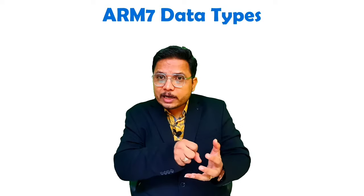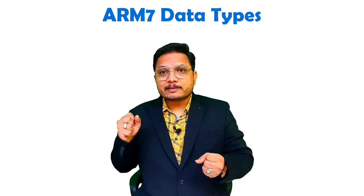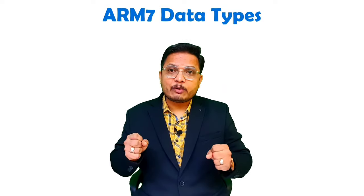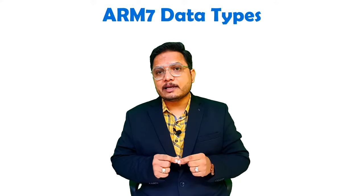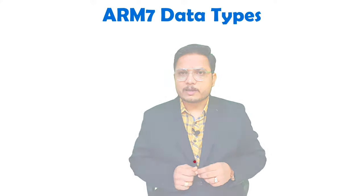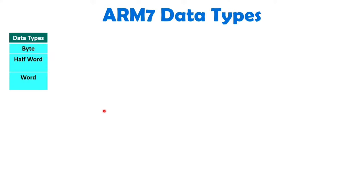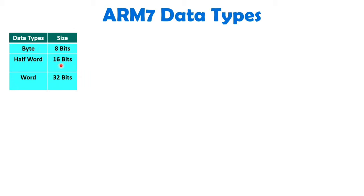And when you load it from the memory inside the ARM processor, at that time also few essential things are happening, that I'll be discussing in this video step by step. In data types we have three categories: byte, half word, and word. Size of byte is 8 bits, half word size is 16 bits, and word size is 32 bits.